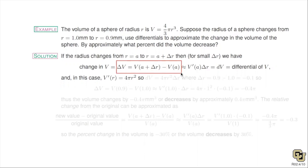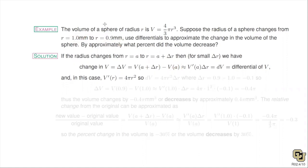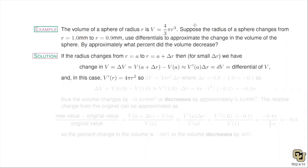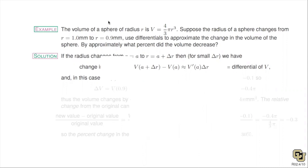Delta v equals v(a + Δr) minus v(a) — the volume at the new value minus the volume at the original. We claim we can approximate this change using v prime of a times Δr. This formula is not random — it actually comes from our limit definition of the derivative. If you put a fraction bar and move the Δr underneath, then take the limit as Δr goes to zero, you get exactly the definition of the derivative.